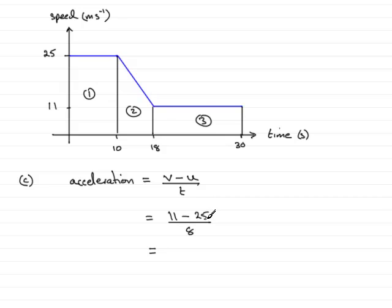So if you work this out, 11 take away 25 is minus 14, and minus 14 divided by 8 comes to minus 1.75 meters per second per second.